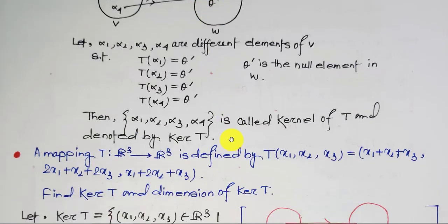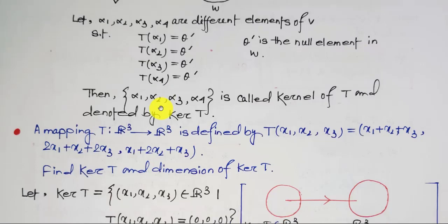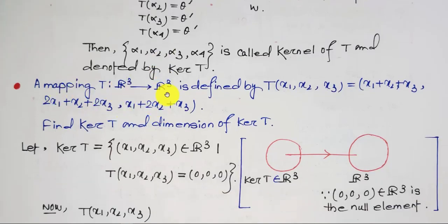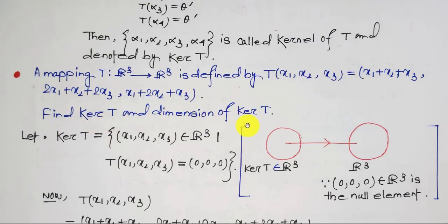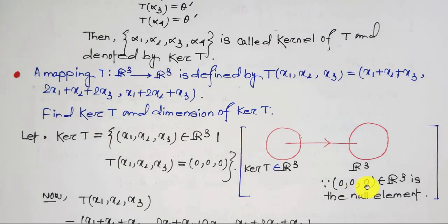Now let us define this with a suitable example. A mapping T: R³→R³ is defined by T(x1, x2, x3) = (x1+x2+x3, 2x1+x2+2x3, x1+2x2+x3). Find ker T and the dimension of ker T. The domain set is R³ and the co-domain set is also R³. Since (0,0,0) is the null element of R³ — each element of R³ has three components, all zero — this is the null element.